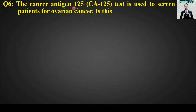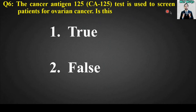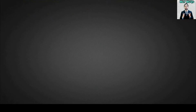MCQ number six: The cancer antigen 125 (CA-125) test is used to screen patients for ovarian cancer — is this true or false? The right answer is option number two: False.